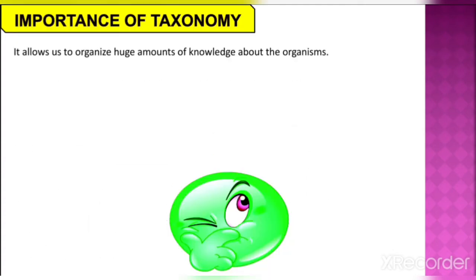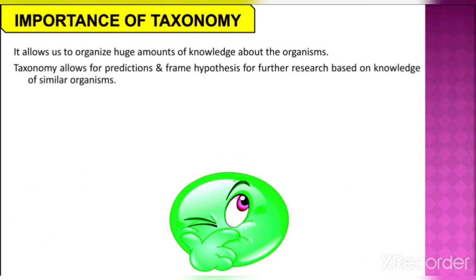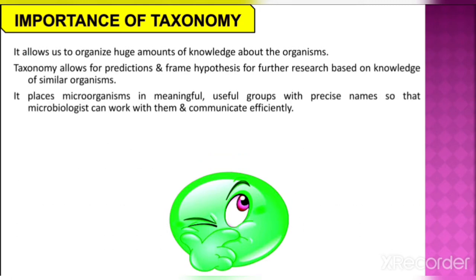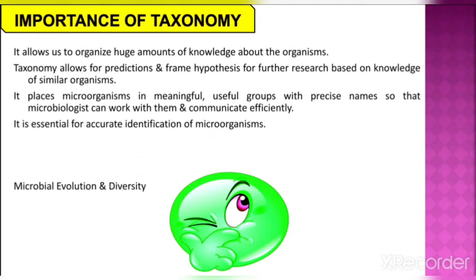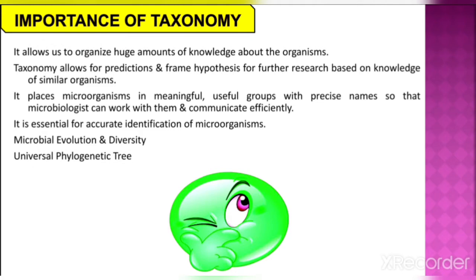The importance of taxonomy — why is there a need to understand taxonomy? It allows us to organize huge amounts of knowledge about organisms. Taxonomy allows for predictions and framing of hypotheses for further research based on knowledge of similar organisms. It places microorganisms in meaningful, useful groups with precise names so that microbiologists can work with them and communicate efficiently. It is essential for accurate identification of microorganisms, and it helps us understand microbial evolution and diversity. We can also easily understand the universal phylogenetic tree.